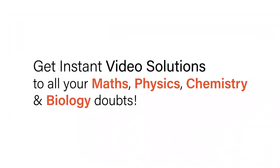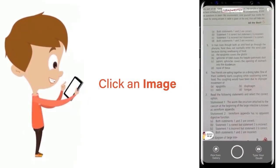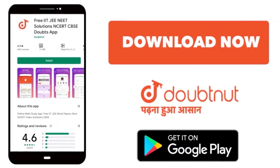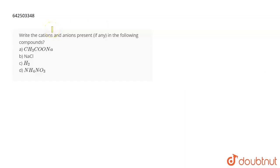With Doubtnut, get instant video solutions to all your math, physics, chemistry, and biology doubts. Just click the image of the question, crop the question, and get instant video solution. Download Doubtnut app today. The question is: Write the cations and anions present in the following compounds.